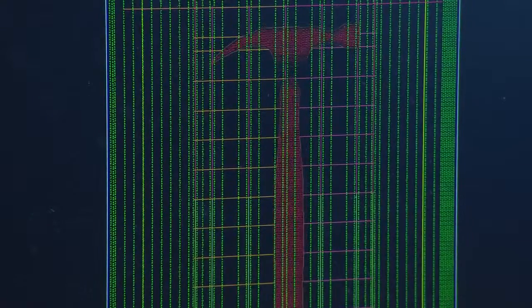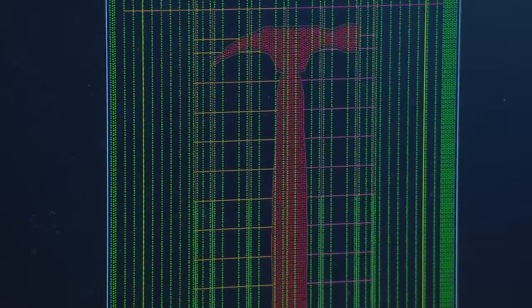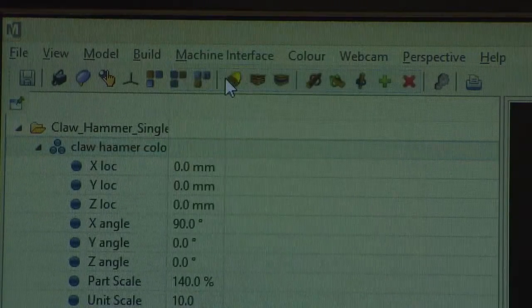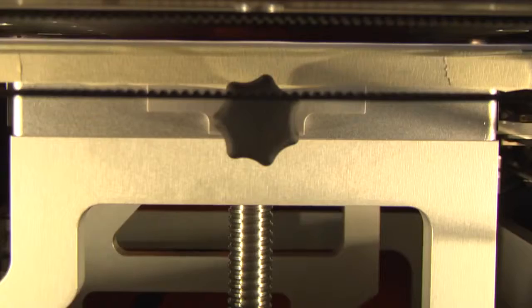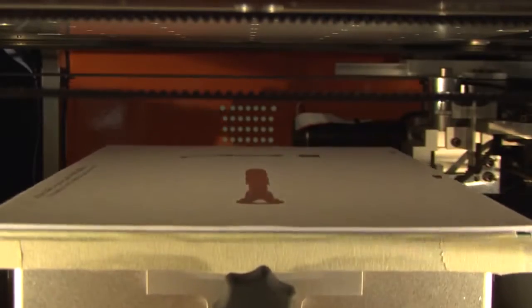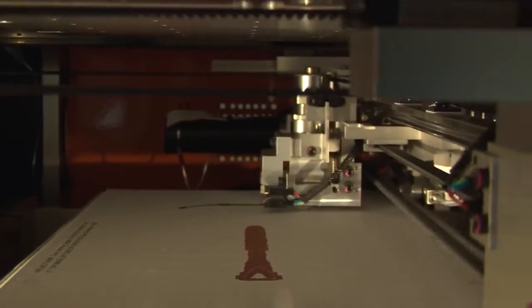Some people claim to have full color capability, but what they're really doing is just changing one colored material to the next very slowly and you get a kind of blend of colors. The true definition of full color is that the machine needs to be able to change from any color at any time in the build.